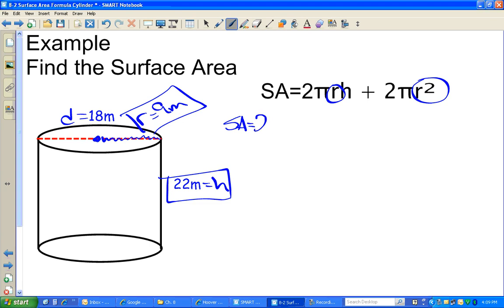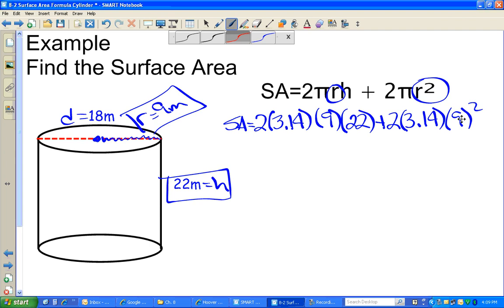And so now I'm just going to plug these into the equation. So the surface area equals 2 times pi, which is 3.14, times the radius, which is 9, times the height, which is 22. Plus 2 times 3.14 times the radius squared, so 9 squared. If you want to just write 81 in here and skip a step, that's okay once you get comfortable with this. So I need to do the exponent first. So this is 2 times 3.14 times 81.